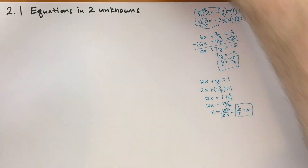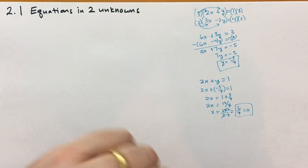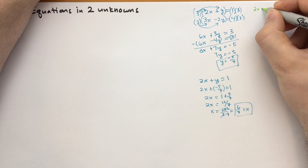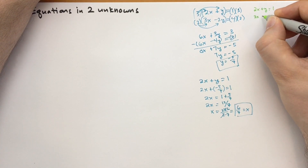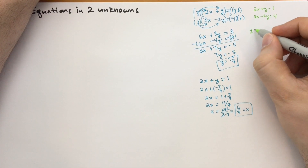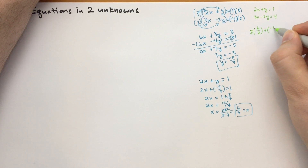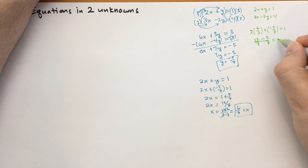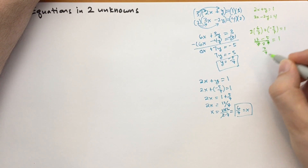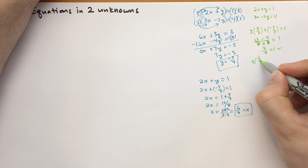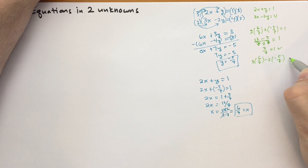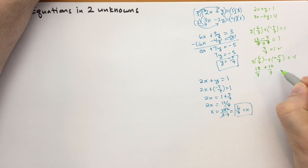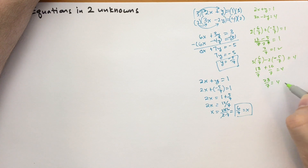Whenever you're solving these problems there's a good chance you made a mistake, so you should always check your work. The original equations were 2x plus y equals 1 and 3x minus 2y equals 4. For the first: 2 times 6 sevenths plus minus 5 sevenths equals 12 sevenths minus 5 sevenths equals 7 sevenths, which is indeed 1. For the second: 3 times 6 sevenths minus 2 times minus 5 sevenths gives 18 sevenths plus 10 sevenths equals 28 over 7, which equals 4. That checks out.